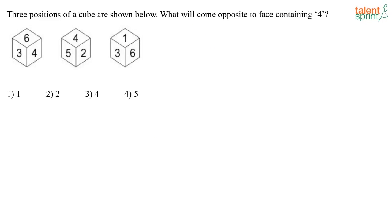Three positions of a cube are shown below. What will come on the face opposite to four? Very easy one — in three angles they have shown the cube. Adjacent faces of four are three, six, five and two. So the opposite face is obviously going to be one.